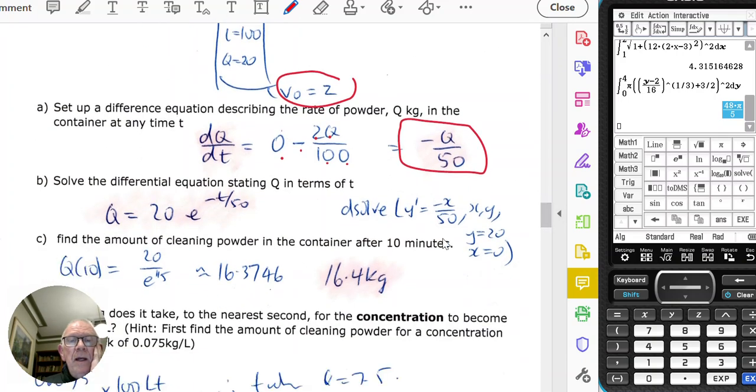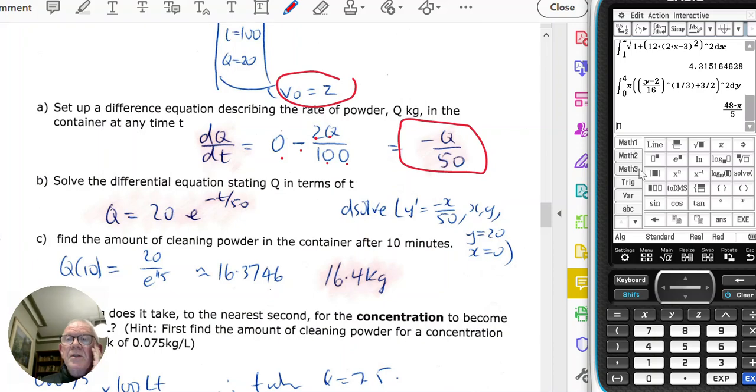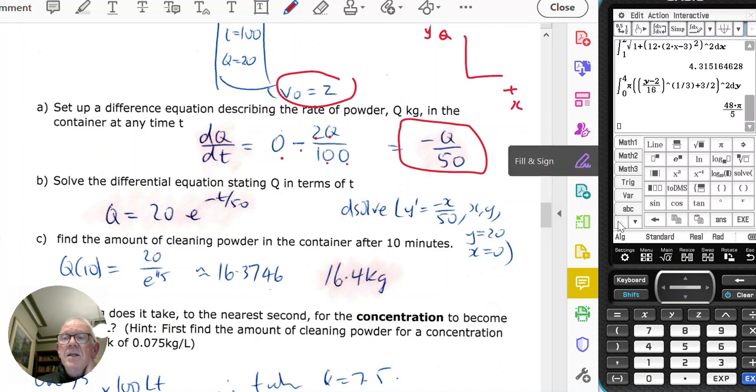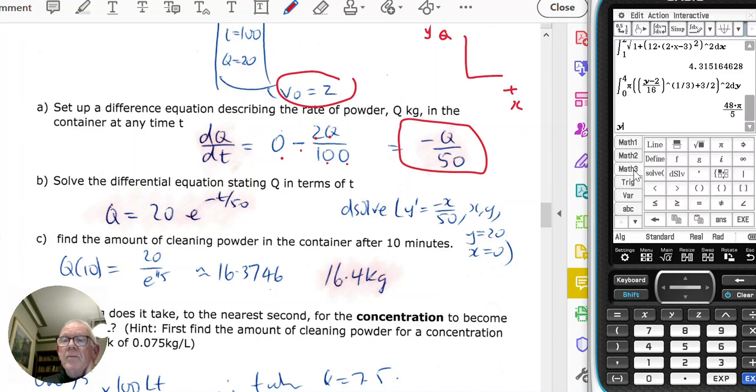And to solve that, I'm just going to use D-solve. So my Q against t, that's my Y against X, therefore I've got Y prime. So Y prime equals negative Y divided by 50.